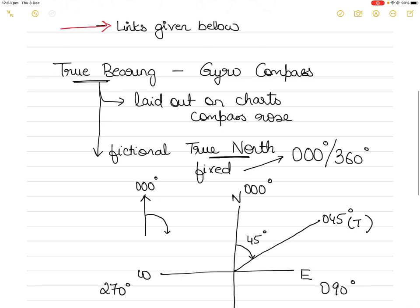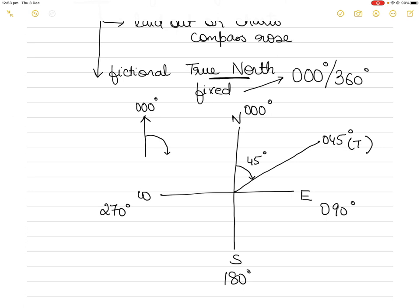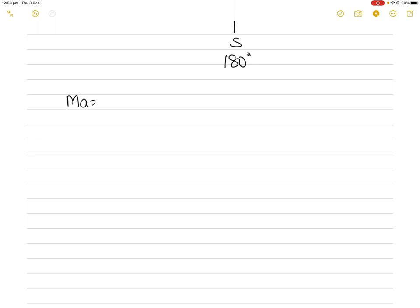So all our bearings on the chart are based on true bearings, and that is what we get from the gyro compass. We use it because it is a reliable means of course measurement and course keeping, because 000 degrees is fixed — it's fictional, so it's fixed. That is the fixed point of reference we need. This point of reference cannot move about; if it moves about, we cannot rely on it for course keeping or course measurement.